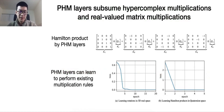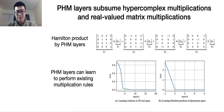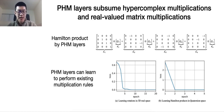Mathematically, PHM layers can subsume hyper-complex multiplication and real-valued matrix multiplication. This can be seen as a bridge between the real space and the hyper-complex space. Empirically on artificial datasets we also show that PHM layers can indeed learn to perform existing multiplication rules, such as learning rotations in 3D real space and the Hamilton products in the Quaternion space.